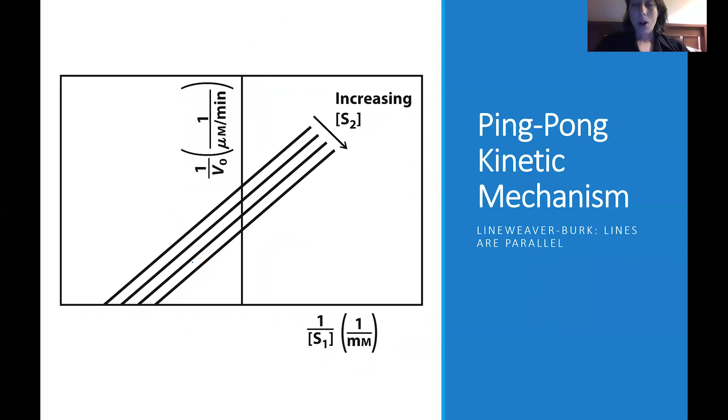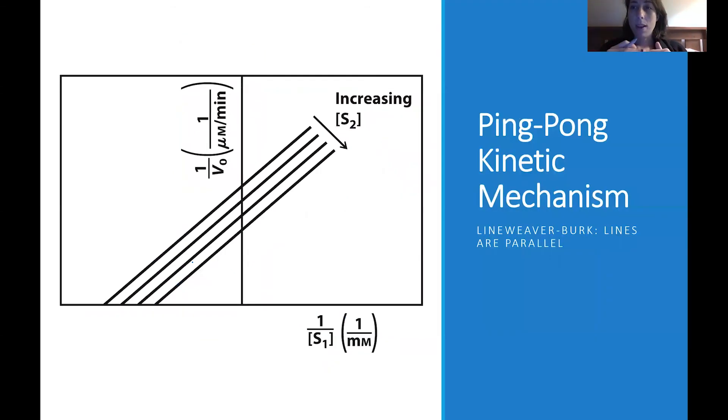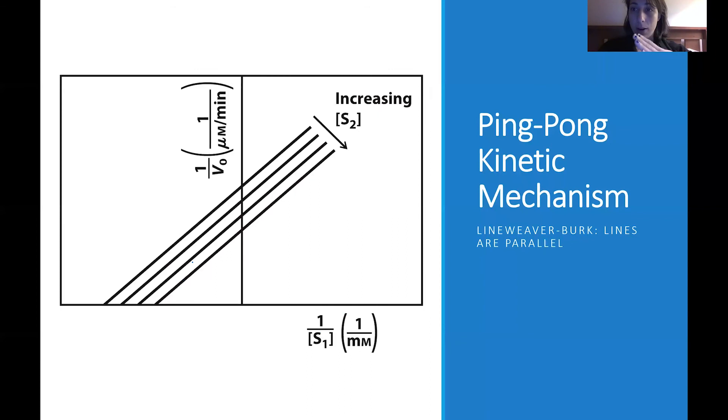If you have a ping-pong mechanism, essentially what we show is that the concentration of substrate 2 is not related in a manner that concentration of substrate 2 is related in a sequential mechanism. So ping-pong mechanism, they don't have the same relationship. They're not interrelated to each other where they're dependent on each other's binding. And so for a ping-pong kinetic mechanism, what you'll see is that the lines are parallel. So there is no intersection point as we showed here, and instead they are parallel to each other.